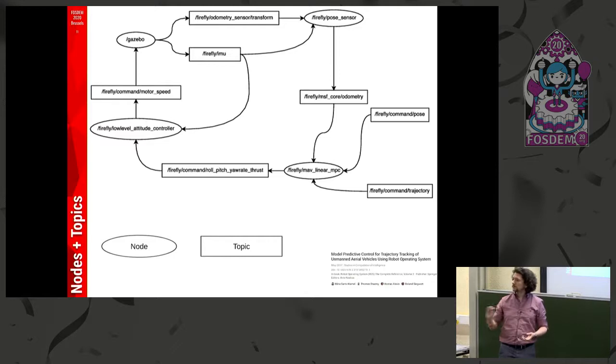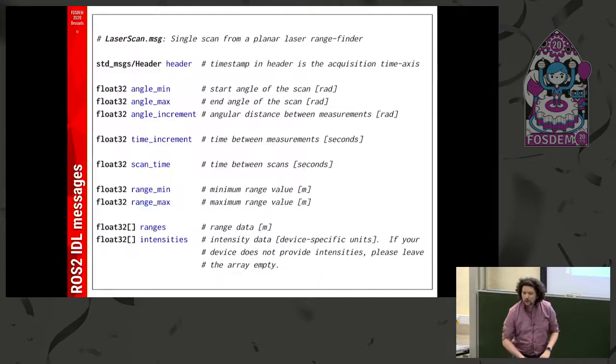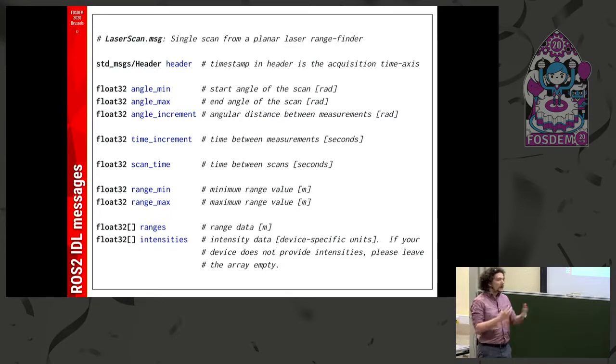Basically, some nodes publish information, some other nodes consume this information. And what information travels through those topics? Essentially, there is a way to define data types with text files, which get translated into records. These records can be used to create new records, so it's basically the same thing that we do in all languages, but starting from a textual description.